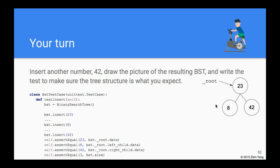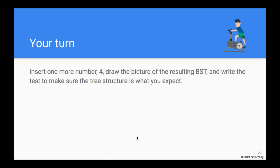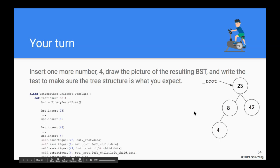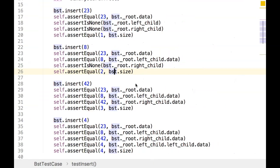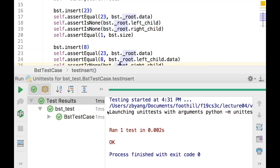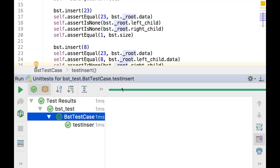Here's the picture I drew with 42 and the corresponding test code I wrote. If you really want to get a hang of it, try inserting 4 as well — draw the picture and write the test to verify the tree structure is correct. I'll show the tree structure and test code in the editor and run it — and yes, it all works.